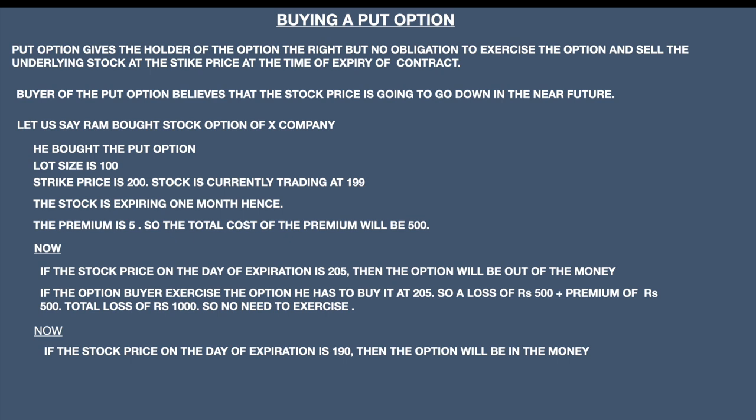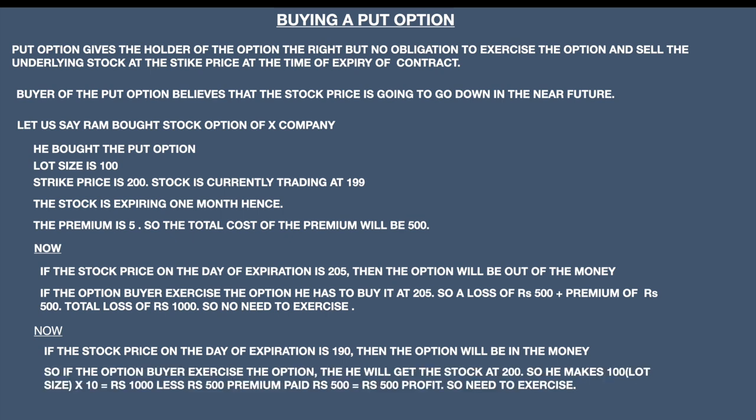Now if the stock price on the day of expiration is 190 rupees, the option is in the money. He will purchase the stock from the open market at 190 rupees and sell it to the option seller at 200 rupees, pocketing 1000 rupees less the 500 rupees insurance premium he already paid — a profit of 500 rupees. So a put option buyer: if the stock price is less than the strike price, it is profitable for him to exercise the option.